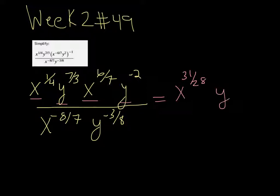I'm going to do the same thing with the y exponent. 7/3 plus 2 is 13/3. Oh, it's minus 2 rather. So 7/3 minus 2 is 1/3.